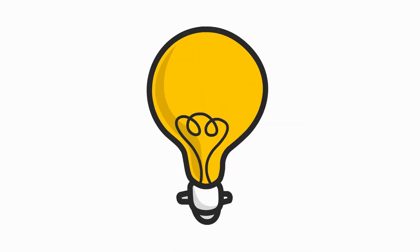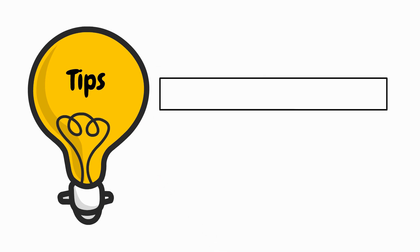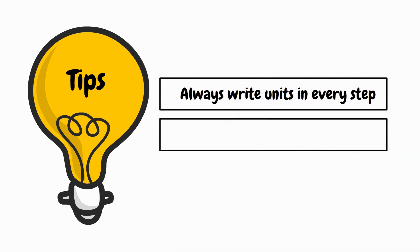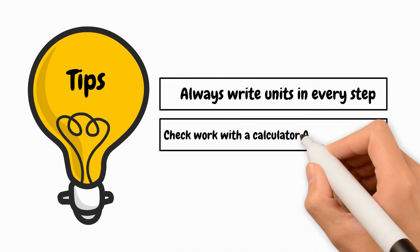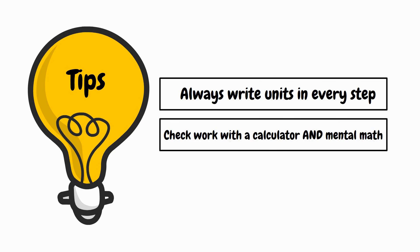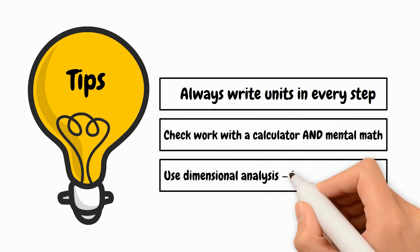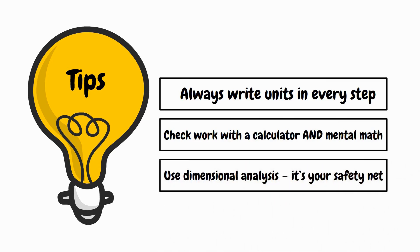Here are three ways to succeed: Always write units in every step. Check your work with a calculator and mental math. Use dimensional analysis — it's your safety net.